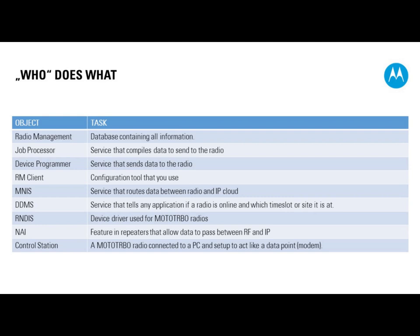If you're going to be using over-the-air programming, you should use DDMS — Device Discovery and Mobility Service. It's a service that runs on the PC and tells the device programmer whether a radio is turned on or off, and which time slot or site the radio is on. This way, when the device programmer wants to send data to a radio over the air, it knows where to send it.